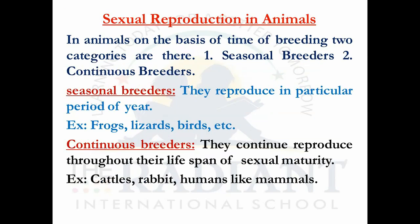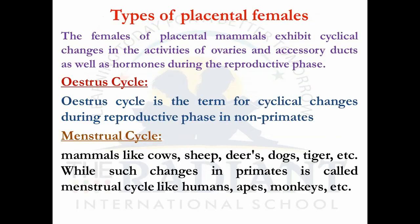We also covered sexual reproduction in animals: seasonal breeders, continuous breeders, and in placental mammals the two types of reproductive cycles — oestrus cycle and menstrual cycle. For today we stop here and will continue sexual reproduction in the next class. Thank you students, thank you very much.